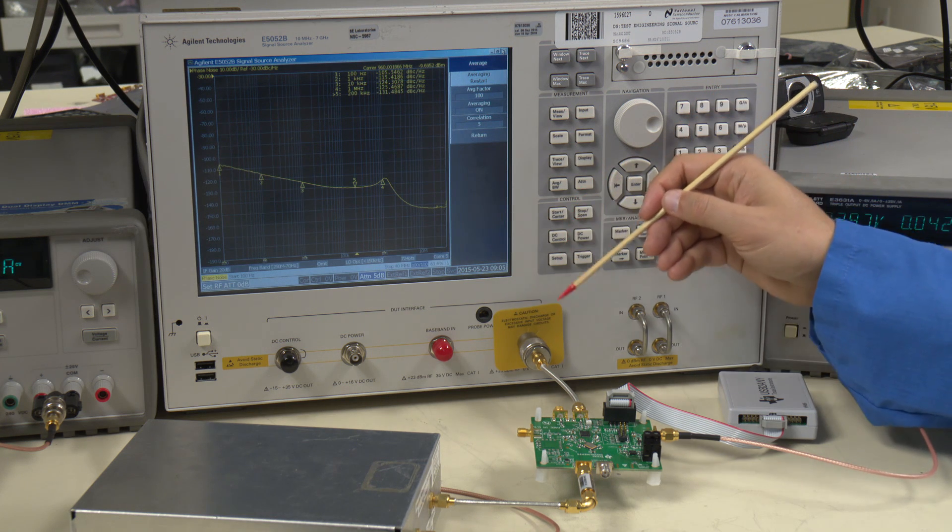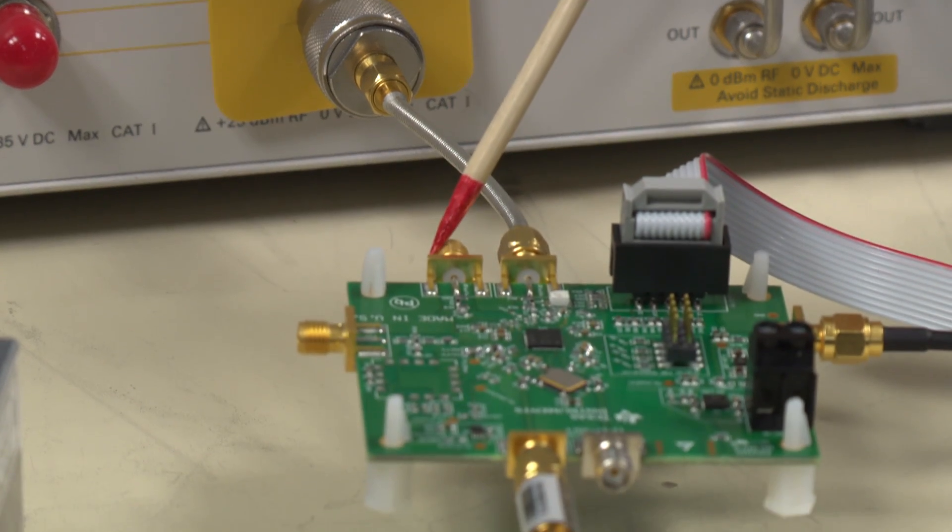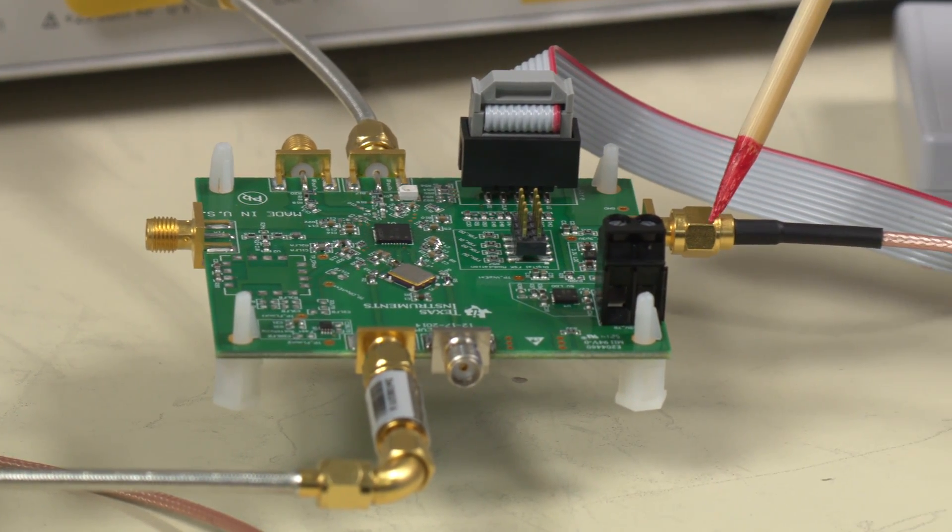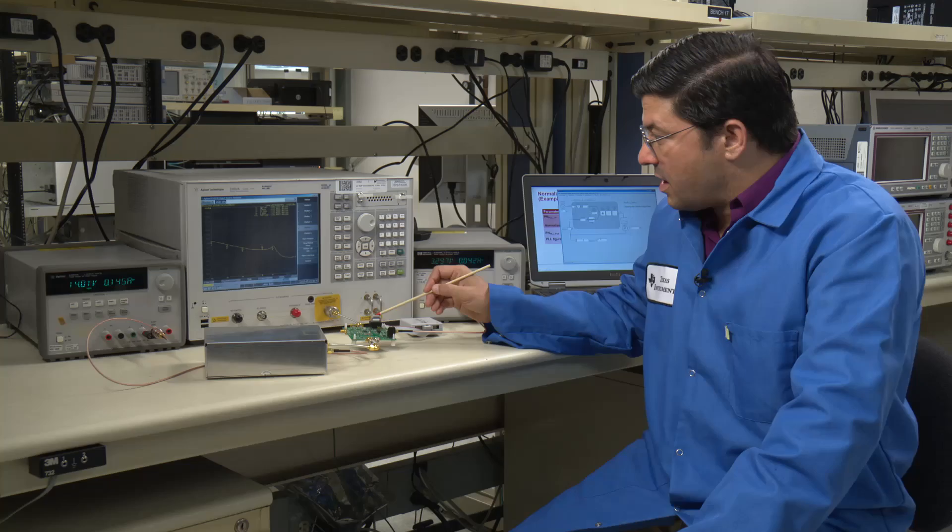This is the LMX2571, which is outputting the signal going out to this SMA connector. And this SMA connector is connected to the Agilent E5052 phase noise analyzer. We also have an unused output here, which is powered down. And for power, we use a 3.3 volt power supply, which comes in through this SMA connector.